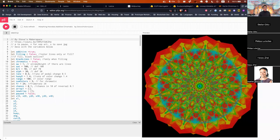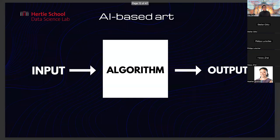Then we have the next kind: AI-based art systems, which are a little bit different. For a rule-based system, the artist writes an algorithm and the algorithm gives an output. But for AI-based art, it also needs a vast quantity of input to help it learn patterns from the data. For rule-based generative art, the artists are the ones who come up with the patterns. For AI-based art, the algorithm is the one that comes up with the patterns itself — and this is the system employed in the most popular models on the market today.